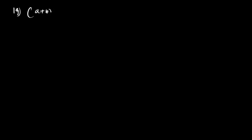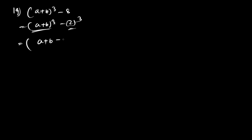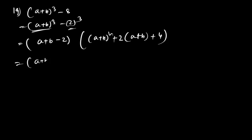Question 19: (a + b)³ – 8 = (a + b)³ – 2³. Treating (a + b) as x and 2 as y, we get (a + b – 2)[(a + b)² + 2(a + b) + 4], which expands to (a + b – 2)(a² + 2ab + b² + 2a + 2b + 4).